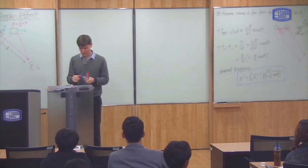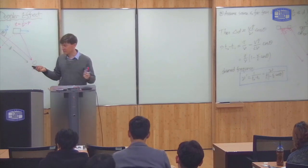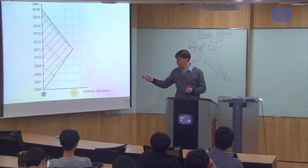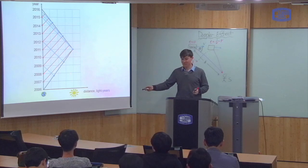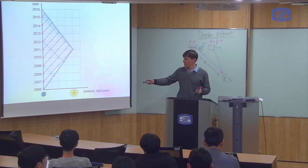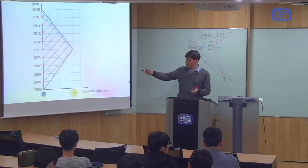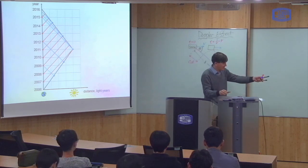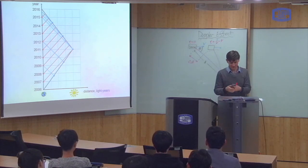We'll talk more about the Doppler effect next time. What I just want to do to finish class today is check that this formula gives us the results we measured in the rocket example. If I put in the data for moving away, I should get one signal every three years, and for moving towards, I should get one signal every third of a year. I just want to check that the formula agrees.